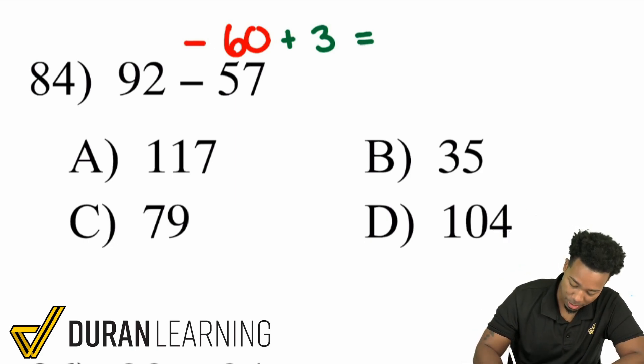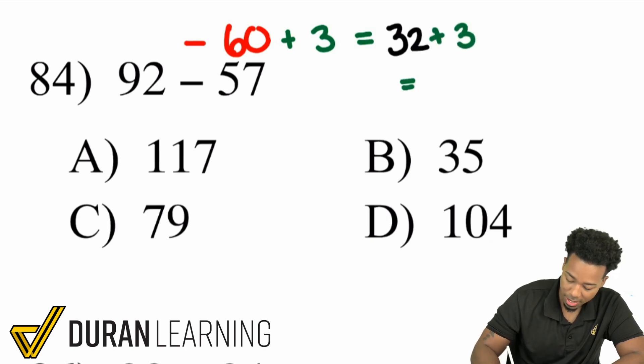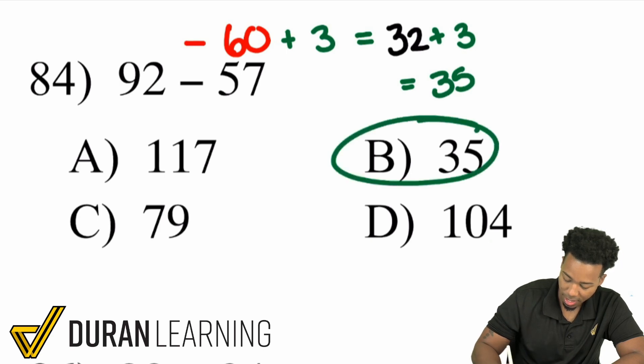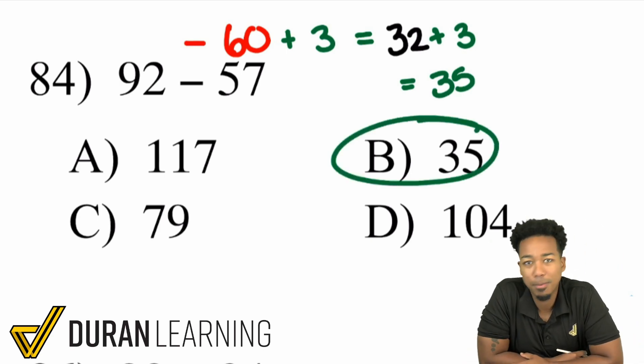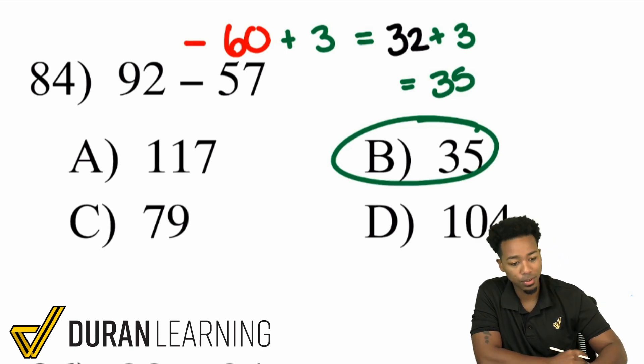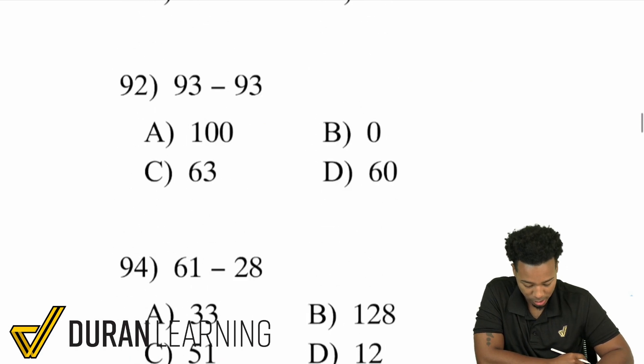So 92 minus 60 that's going to be 32. And that's 32 plus 3. And again in your head that'll give you 35 and you're all good. My party people here the idea here is to be more efficient. We know how to do these problems regularly but now let's take it to the next level and really gear things up. So let's take a look at some other problems here.